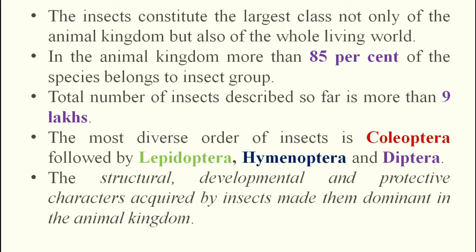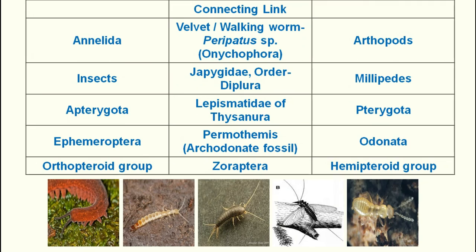Connecting links are organisms that share characteristics between two groups. Between annelids and arthropods, the connecting link is Peripatus — the velvet worm or walking worm — belonging to the subphylum Onychophora. Between insects and millipedes, the connecting link is Japygids of the order Diplura.